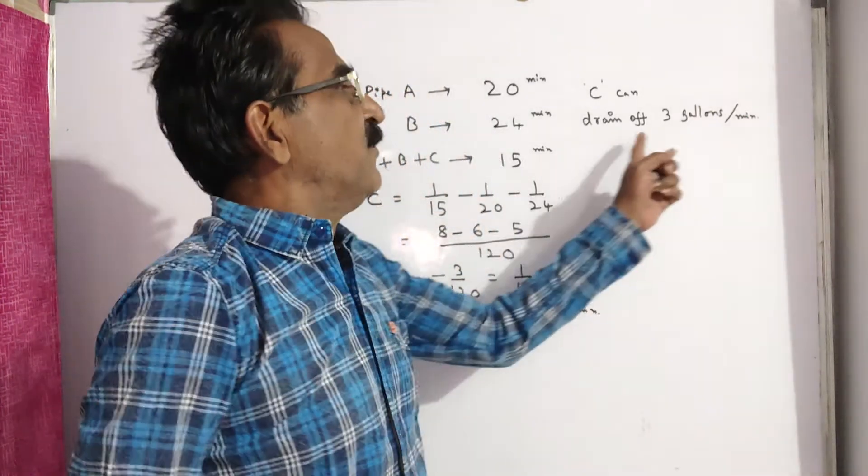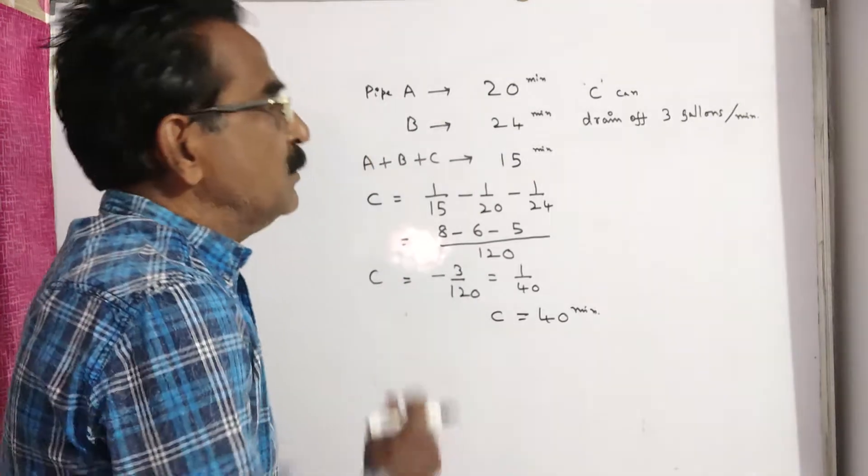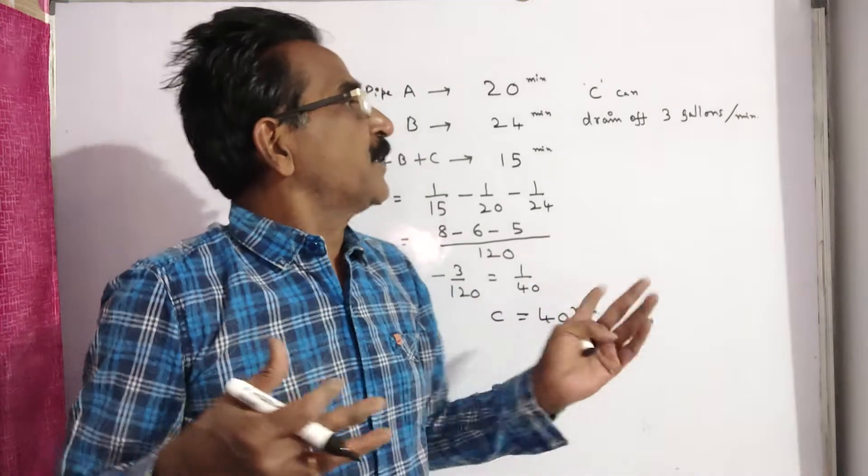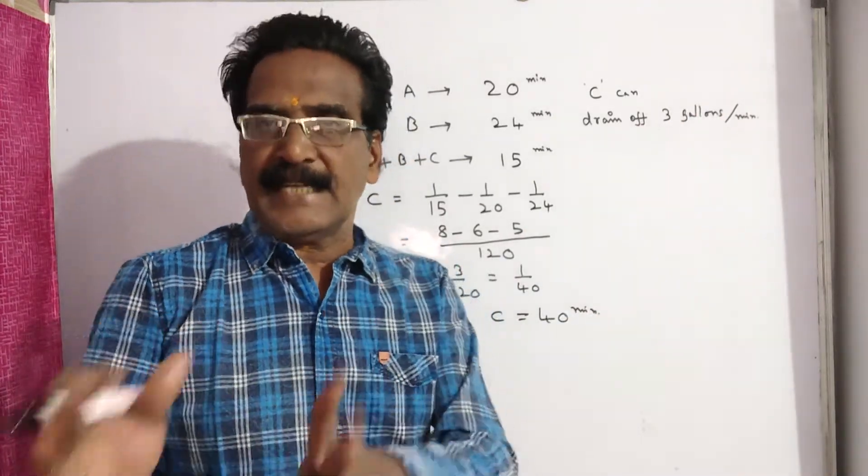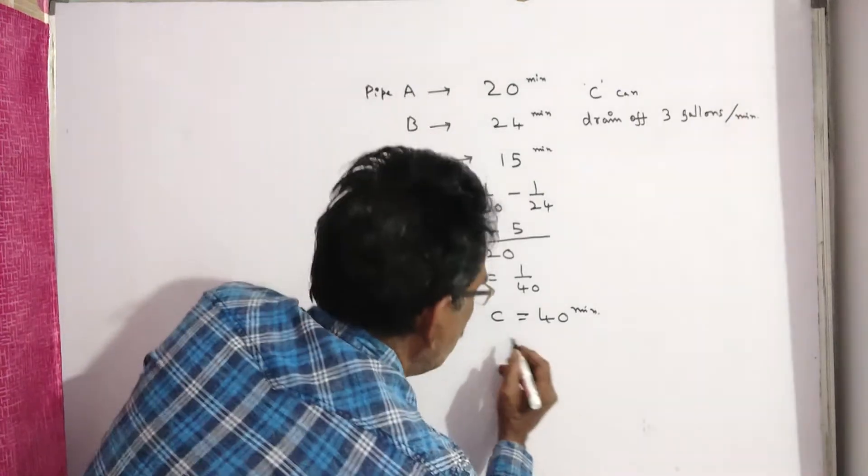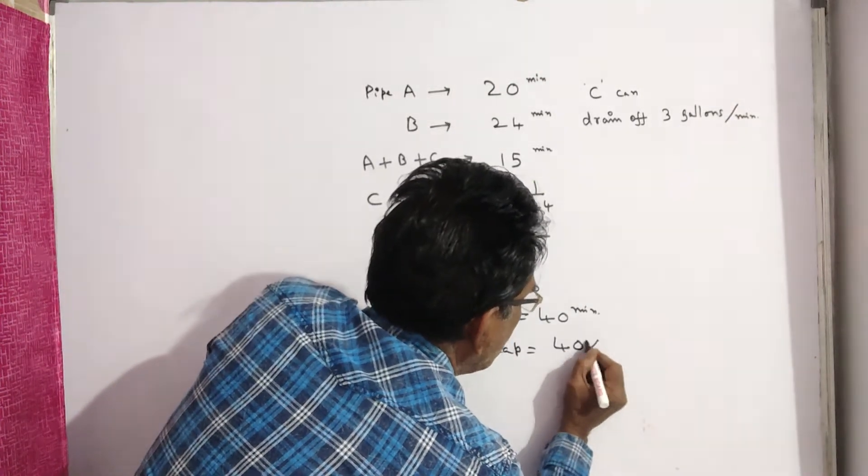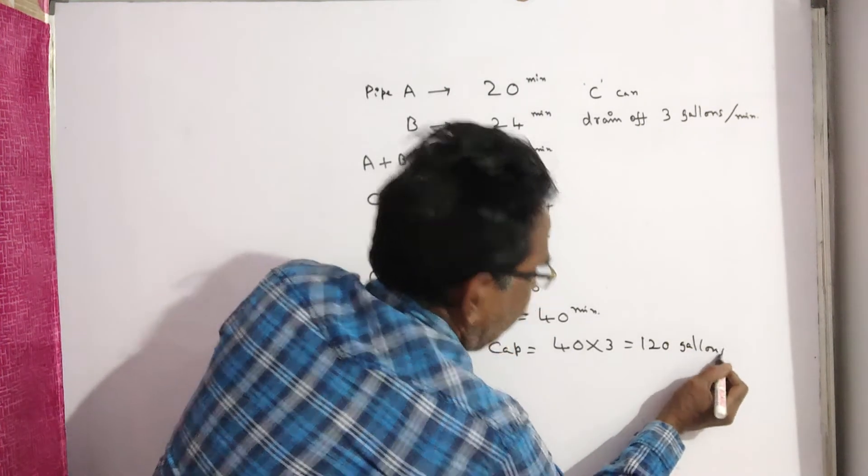C drains off 3 gallons per minute, so in 40 minutes it can drain off 40 into 3, which is 120 gallons. That is the capacity of the tank. So capacity of the tank is equal to 40 into 3, that is equal to 120 gallons.